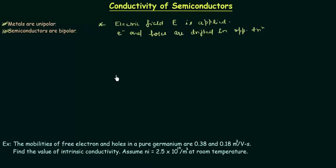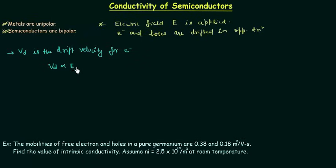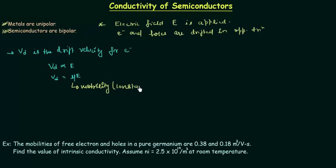Now let's consider the drift velocity of electrons. If Vd is the drift velocity for an electron, then Vd is directly proportional to the applied electric field intensity E. If we remove the proportionality sign we introduce a constant Mu. Mu is called mobility, and it is a constant property of the material.